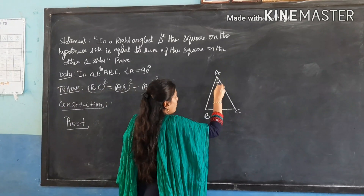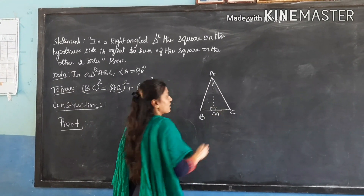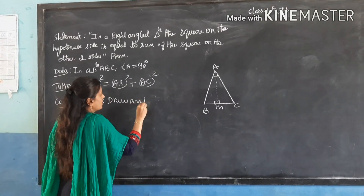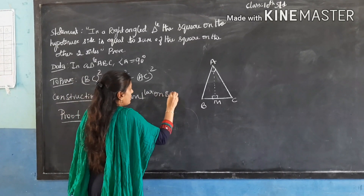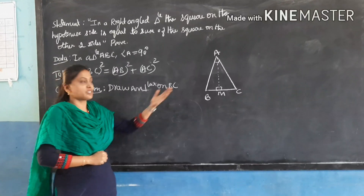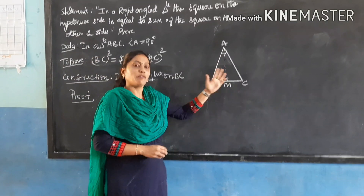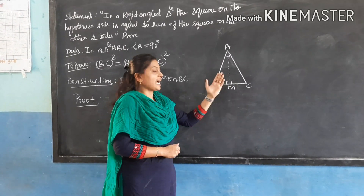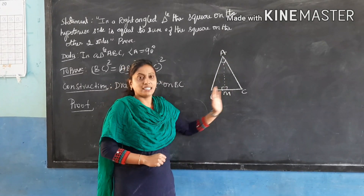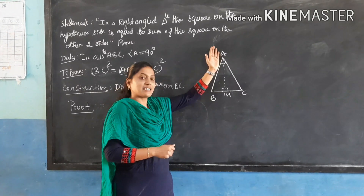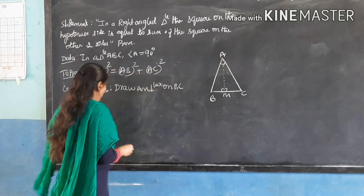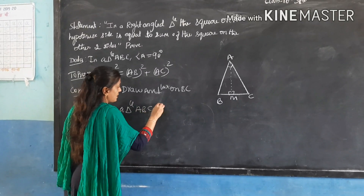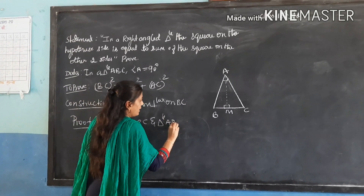For the construction, I have to draw AM perpendicular on BC. Before the construction I had only one triangle, that is ABC. But after the construction I had two more triangles — that is ABM and ACM. Now I am going to take the original triangle ABC and triangle ABM.